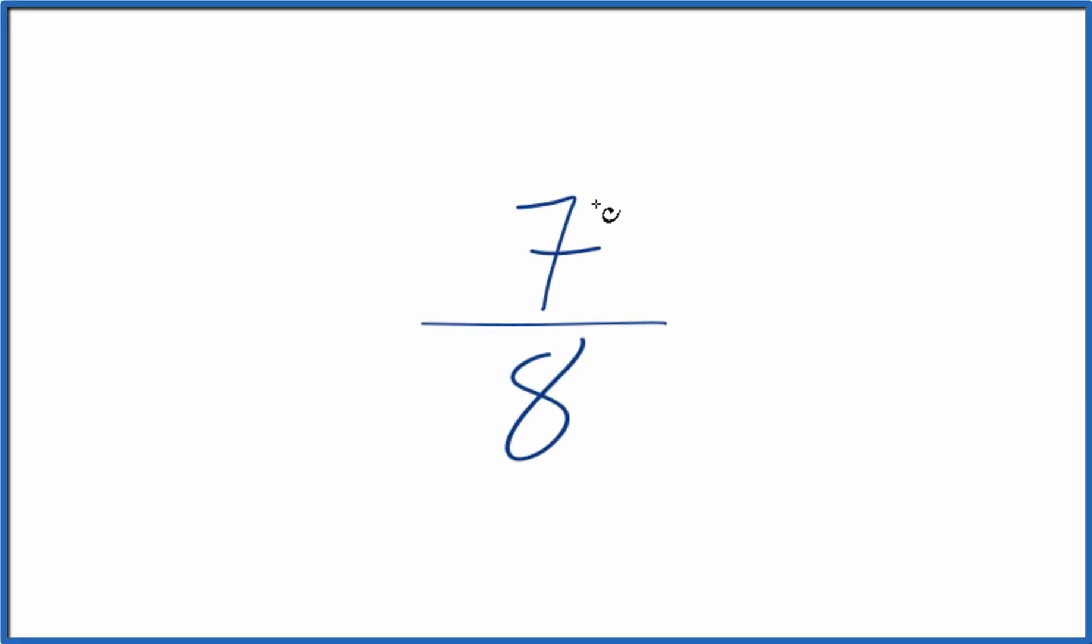Here's how you can find equivalent ratios for 7 eighths. What we're going to do is multiply the numerator and the denominator by the same number.